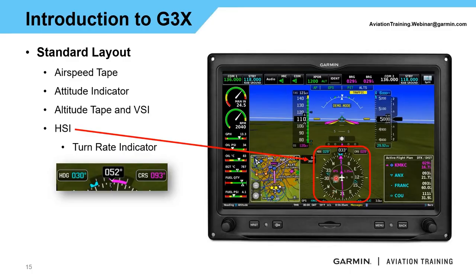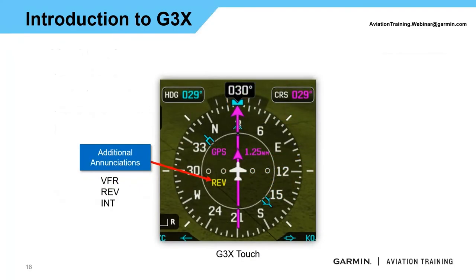We also have bearing pointers — those blue icons — and two from indicators; it follows a standard HSI layout. There are some additional enunciations the G3X shows us. You have your heading bug in blue, which you can change with either a knob or by selecting the box and typing in. It shows the course — here showing 029, matching the course pointer on the HSI. There's our service level: flying magenta needles means GPS course guidance; green needles means VOR or localizer.